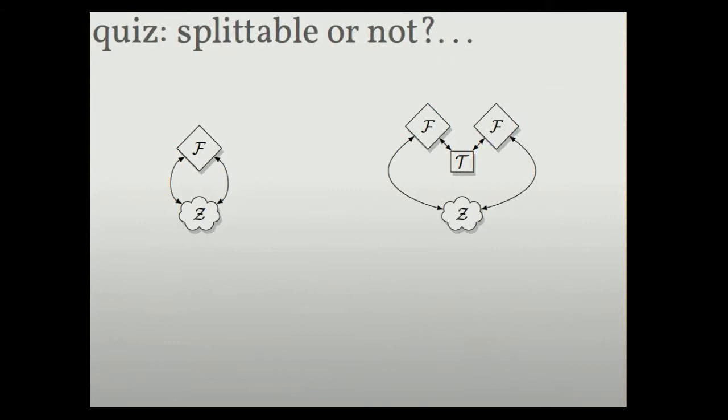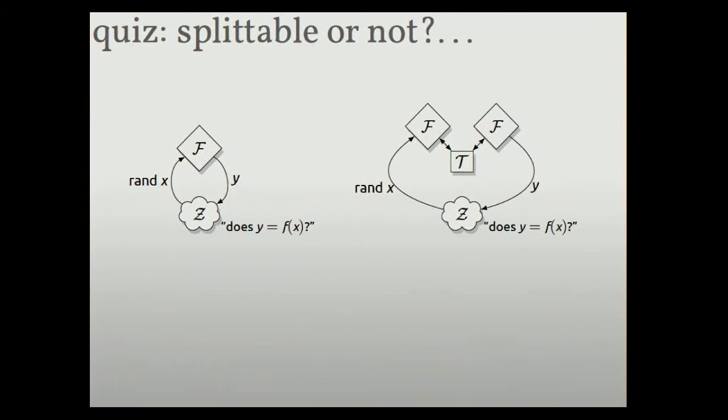So we have to consider these two different interactions. I'll help. Let's consider an environment that picks a random X and sends it as Alice, gets back a string, and says, did I get back F of X? The environment can know what F is supposed to be. If you think of what T has to do, T wants these two pictures to look the same. He gets F of X on his left, and he has to give back a preimage of F of X on his right. He has to invert F, which we know is not possible. It's a one-way function.